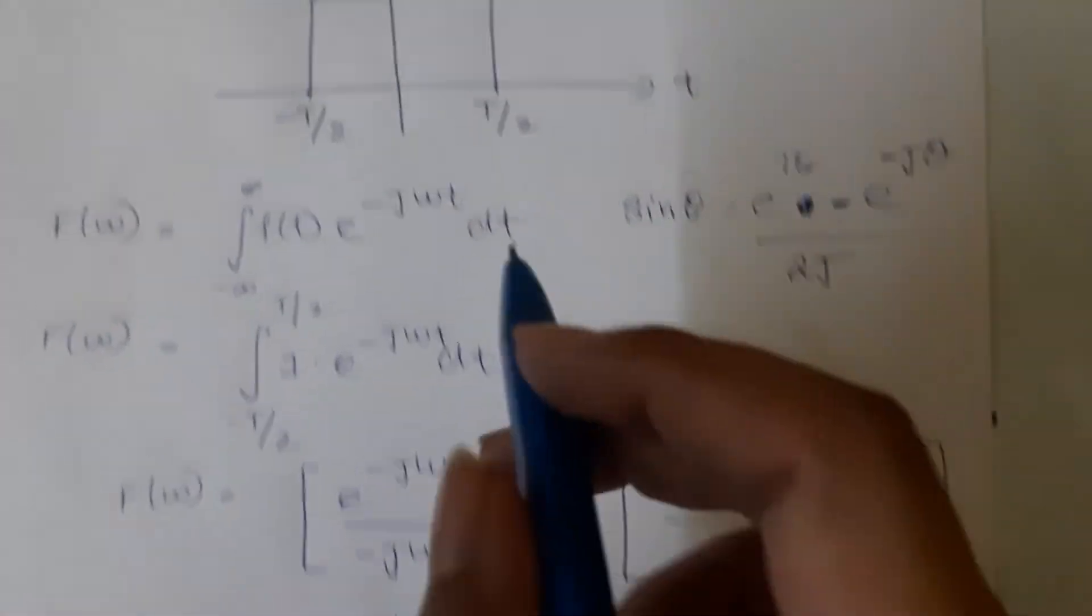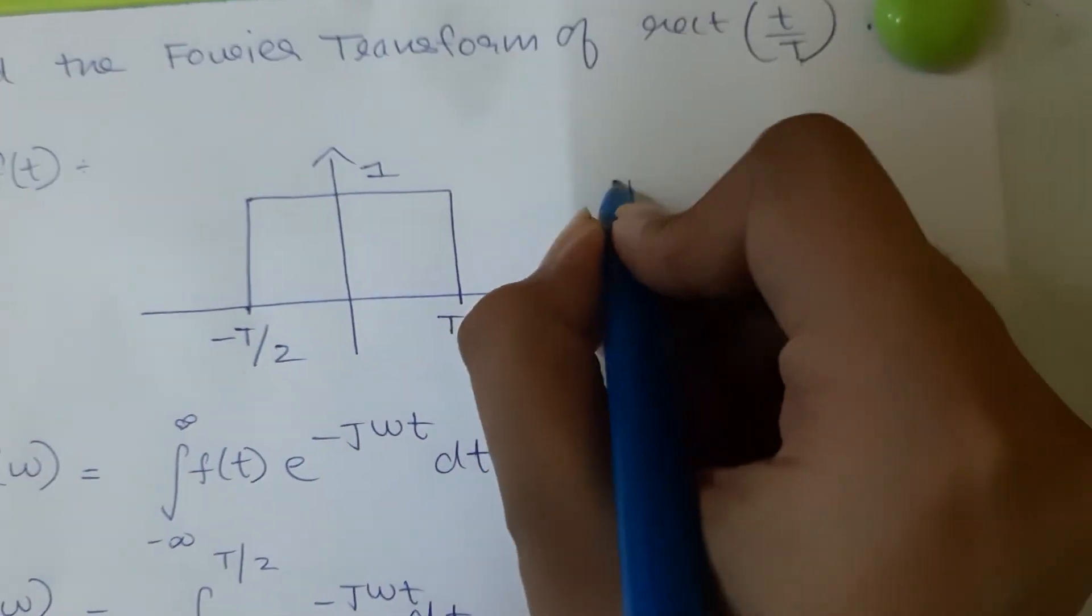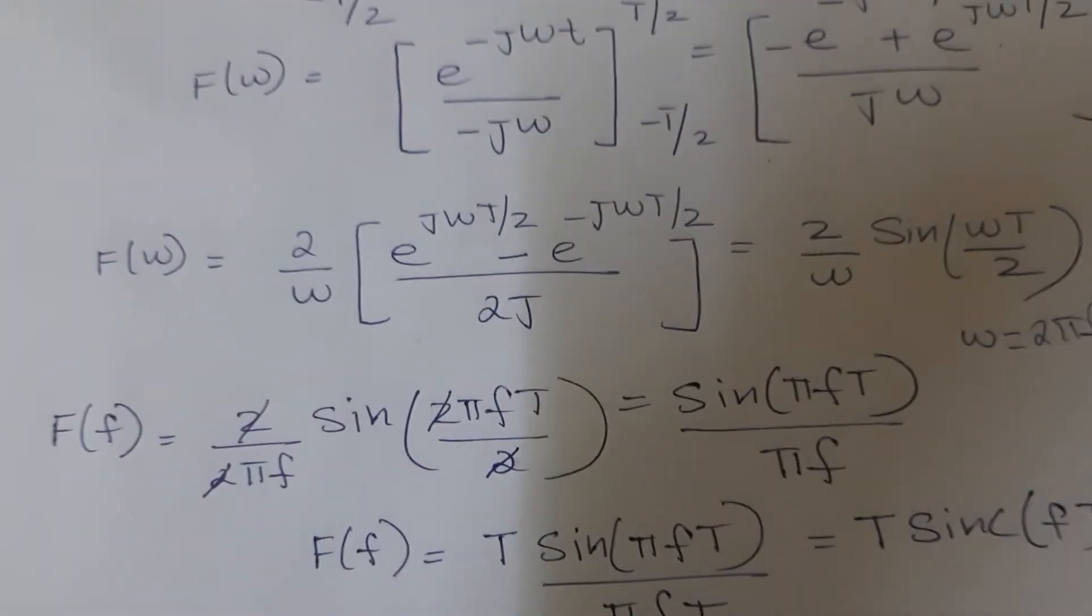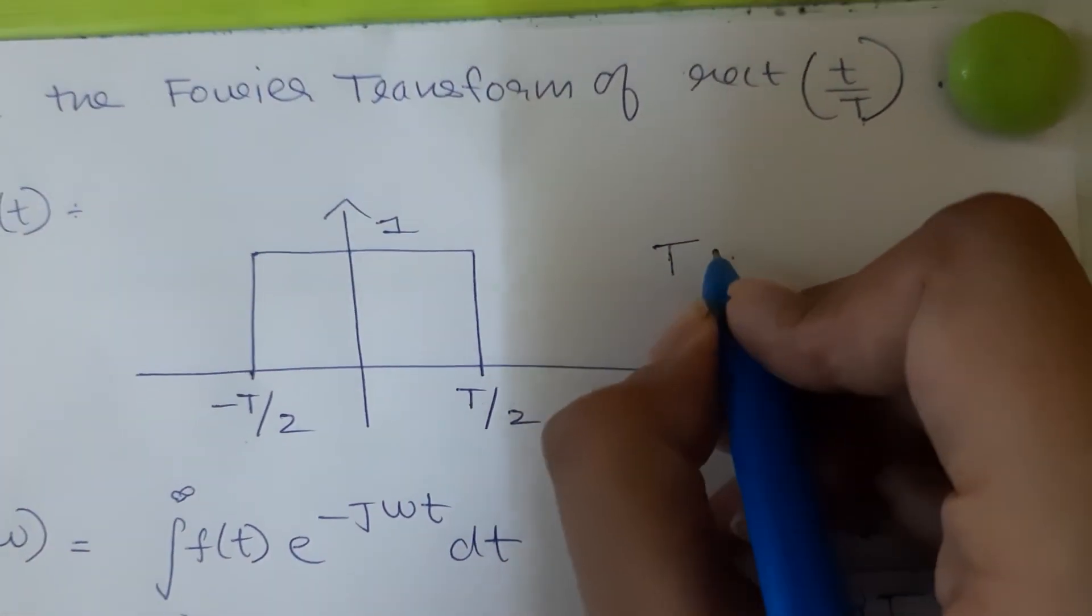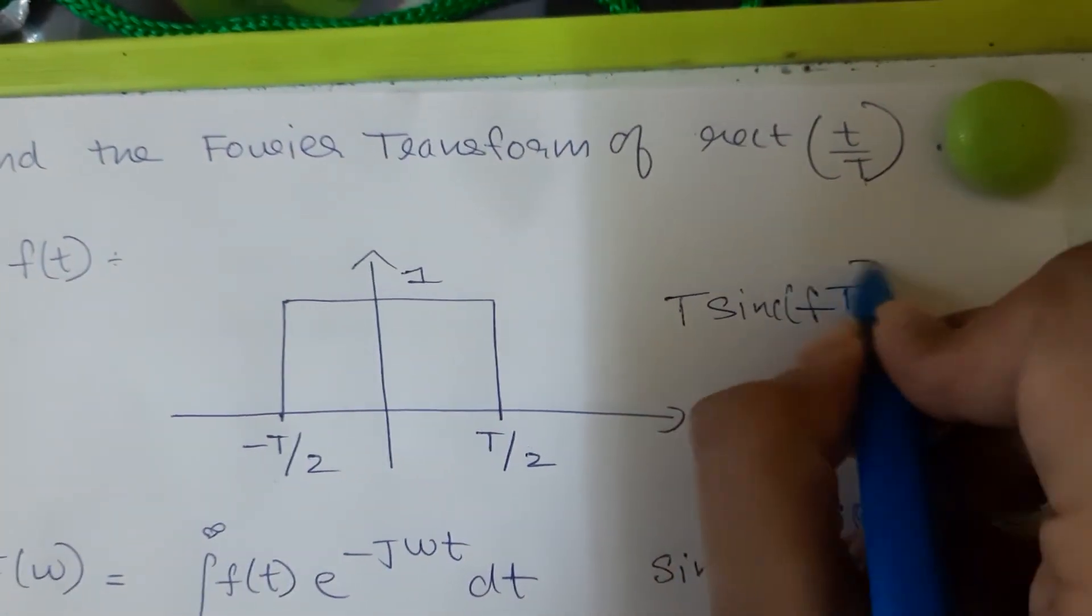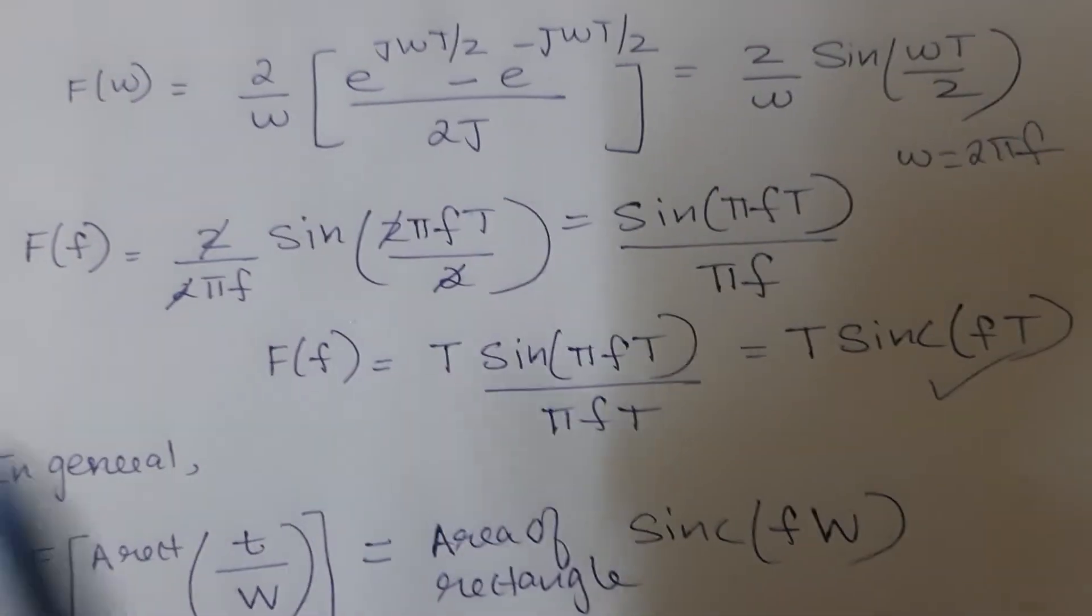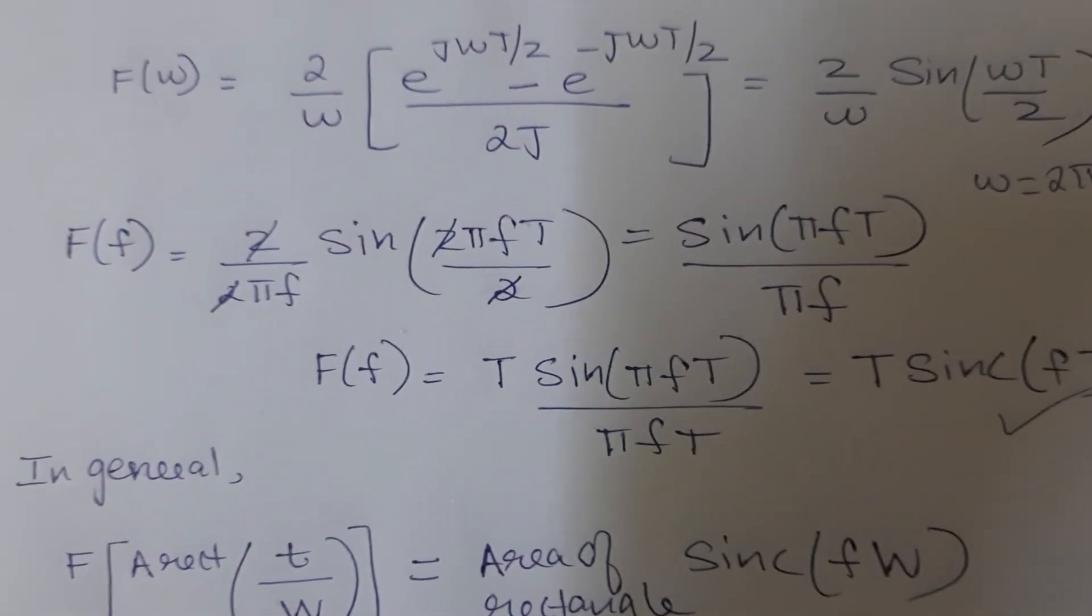Let us see what is the area of this rectangle. Area is nothing but tau. What was the next step? Sinc f into the total width. So I will write tau sinc f into total width is tau. Tau sinc f tau. I see both my answers match. So if you know this shortcut you can write the Fourier transform of any rectangular pulse directly.